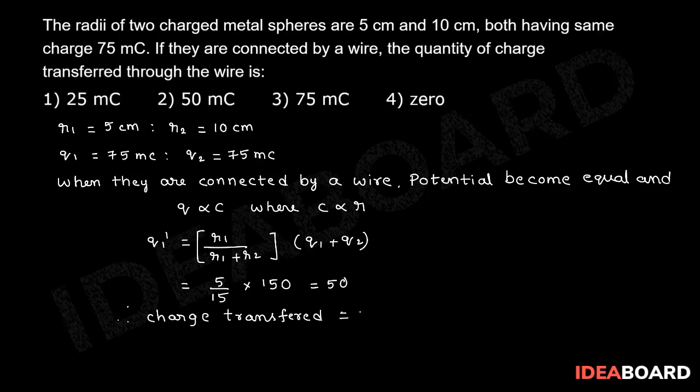is equal to 75 minus 50, that equal to 25 millicoulomb. So the first option is the right option.